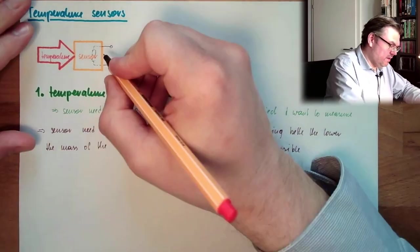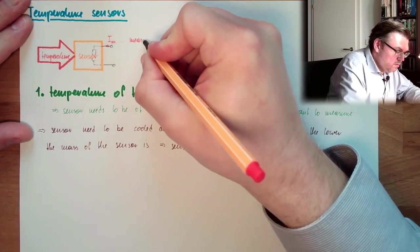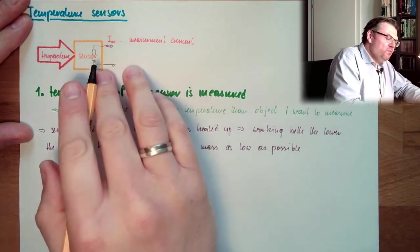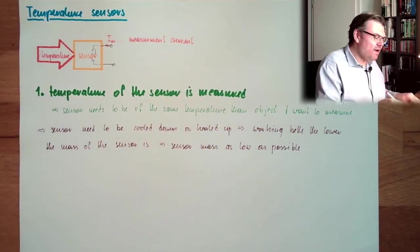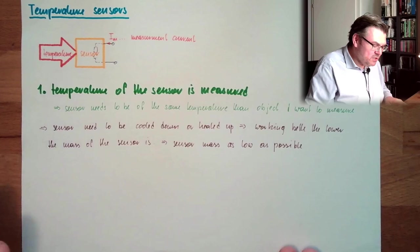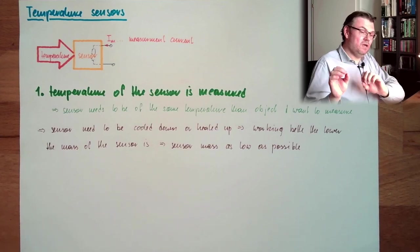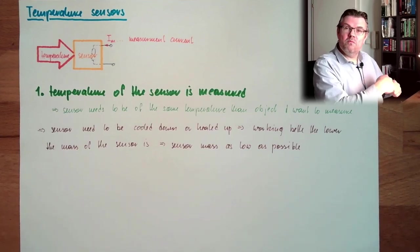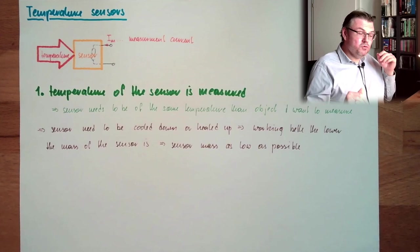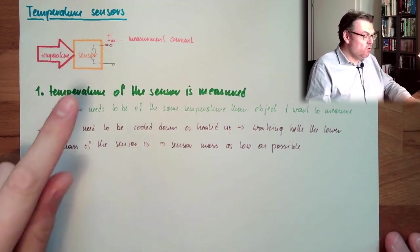Then we have another thing: here is the measurement current. This needs to be there, because then we have to read this out. The sensor is changing one parameter and we have to read this out. And if it's electrical parameter, what it is usually, of course there are these fever thermometers where you have this expanding liquid inside and so on, alright. But this is usually not for industrial mechanisms, so we measure this electrically, usually.